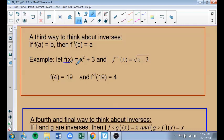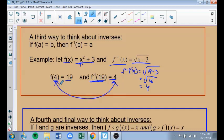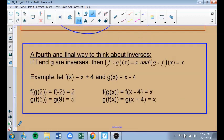For example, here's F of X equals X squared plus 3. The inverse of F of X, we call this F inverse, F inverse is square root of X minus 3. F of 4 is 19. Plug in a 4 for X squared, you get 16 plus 3 is 19. If I do F inverse of 19, F inverse of 19 is the square root of 19 minus 3, which is the square root of 16, which is 4. We've undone what we started with.